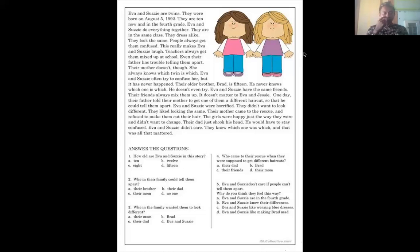Okay. I remember Eva and Susie do everything together. They are in the same place. They dress alike. They look the same. People always get them confused. This really makes Eva and Susie laugh. Teachers always get them mixed up at school. Even their father has trouble telling them apart. Their mother doesn't though. She always knows which twin is which. Eva and Susie often try to confuse her, but it has never happened. Their older brother Brad is 15. He never knows which one is which. He doesn't even try. Eva and Susie have the same friends. Their friends always mix them up. It doesn't matter to Eva and Susie.